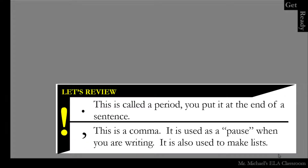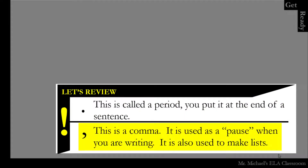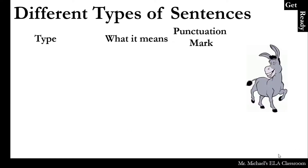So let's do a quick review. That dot is called a period or a full stop — you put it at the end of a sentence. And that is a comma; it is used as a pause when you are writing, and it is also used to make lists.